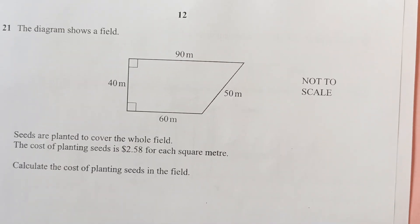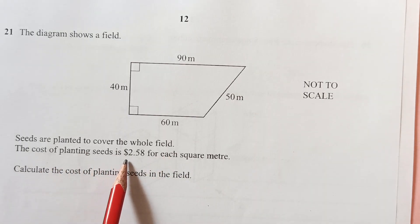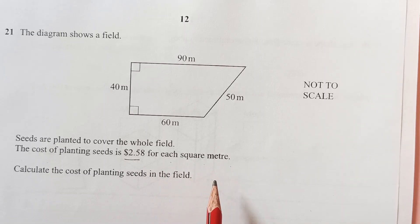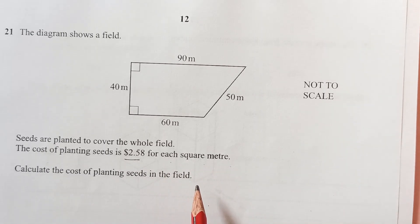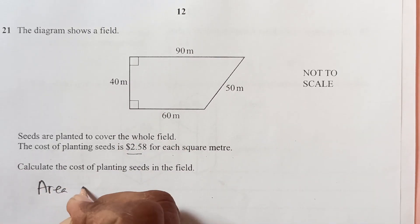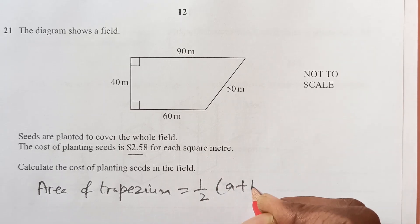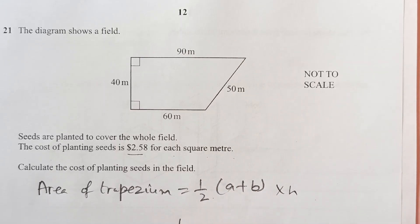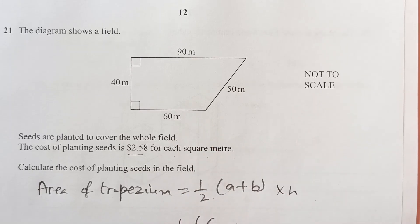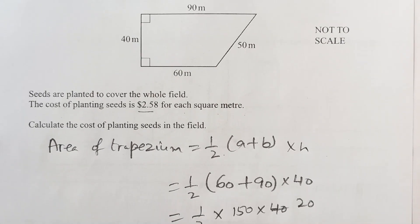Number 21. Here the diagram shows a field. The seeds are planted to cover the whole field. The cost of planting the seed is 2.58 for each square meter. Calculate the cost of planting. Now we have to find out first the area of this field. This is a trapezium. So area of trapezium, we have the formula half into A plus B, sum of parallel sides times height. Half times A, A is 60 plus 90 times 40. This is half times 150 times 40. So this is 20. This is going to be 3000 meters squared.